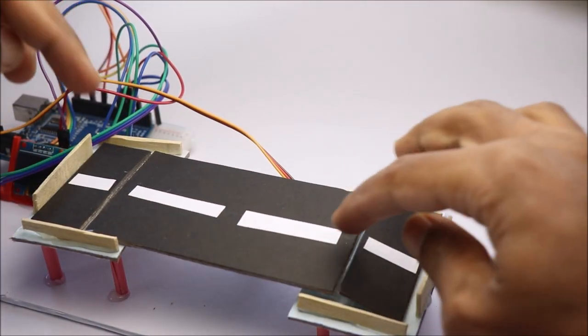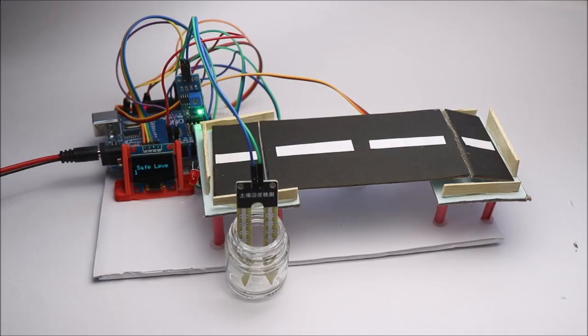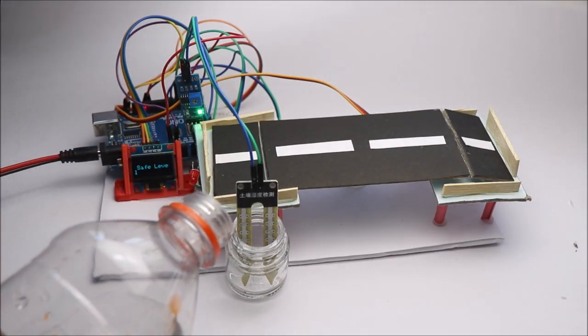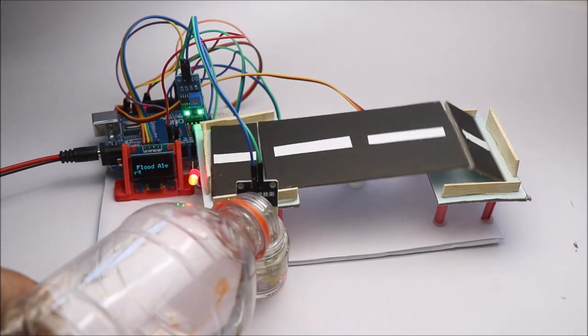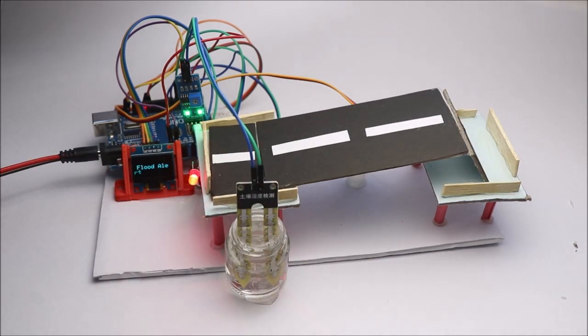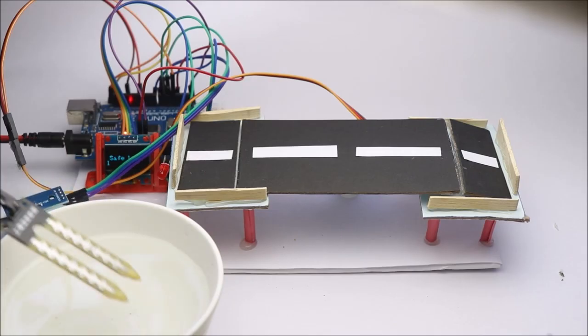Now our project is ready for testing. To resemble the flood, I will fill up this small jar with water. The servo lifts the bridge when water is sensed by the moisture sensor. Now you can see the display message and red light alert.